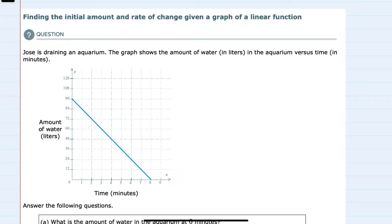We're told here that Jose is draining an aquarium. The graph shows the amount of water in liters in the aquarium versus time in minutes.